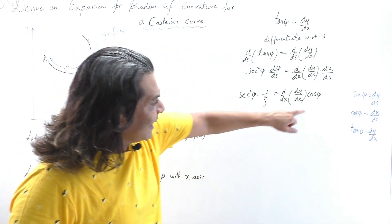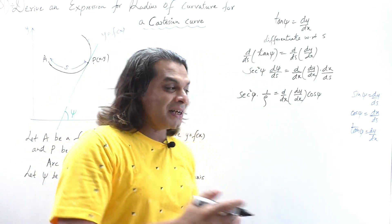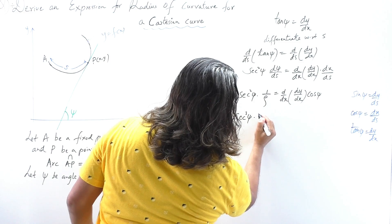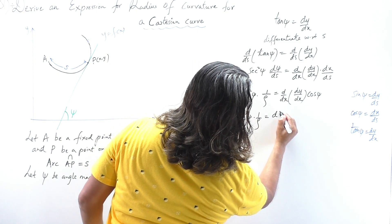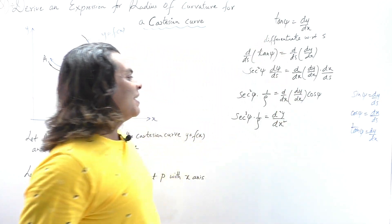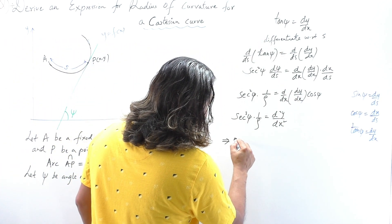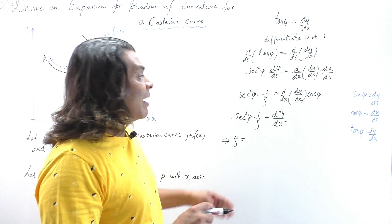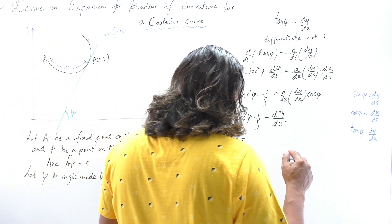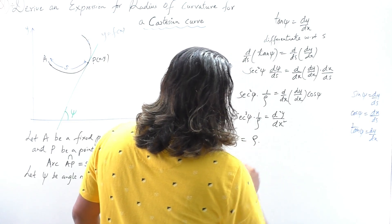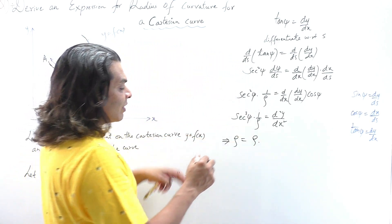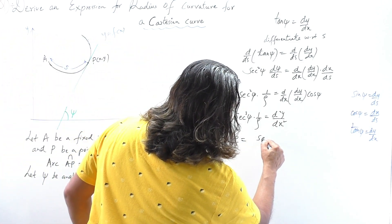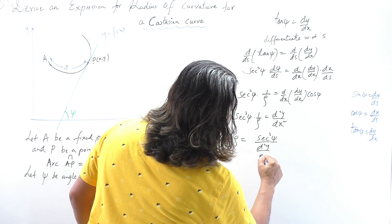Taking cos ψ to the left side, 1/cos becomes secant, so sec³ψ · (1/ρ) = d²y/dx². Therefore, ρ = sec³ψ / (d²y/dx²).